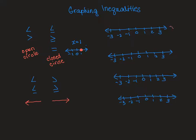Let's look at x is greater than negative 1. It can't equal negative 1, but it's going to be anything greater than negative 1. So I'm going to put an open circle — notice the greater than sign has the arrow going towards the right. My circle is open because it cannot equal negative 1. It can equal everything more than negative 1, but it can't equal negative 1.